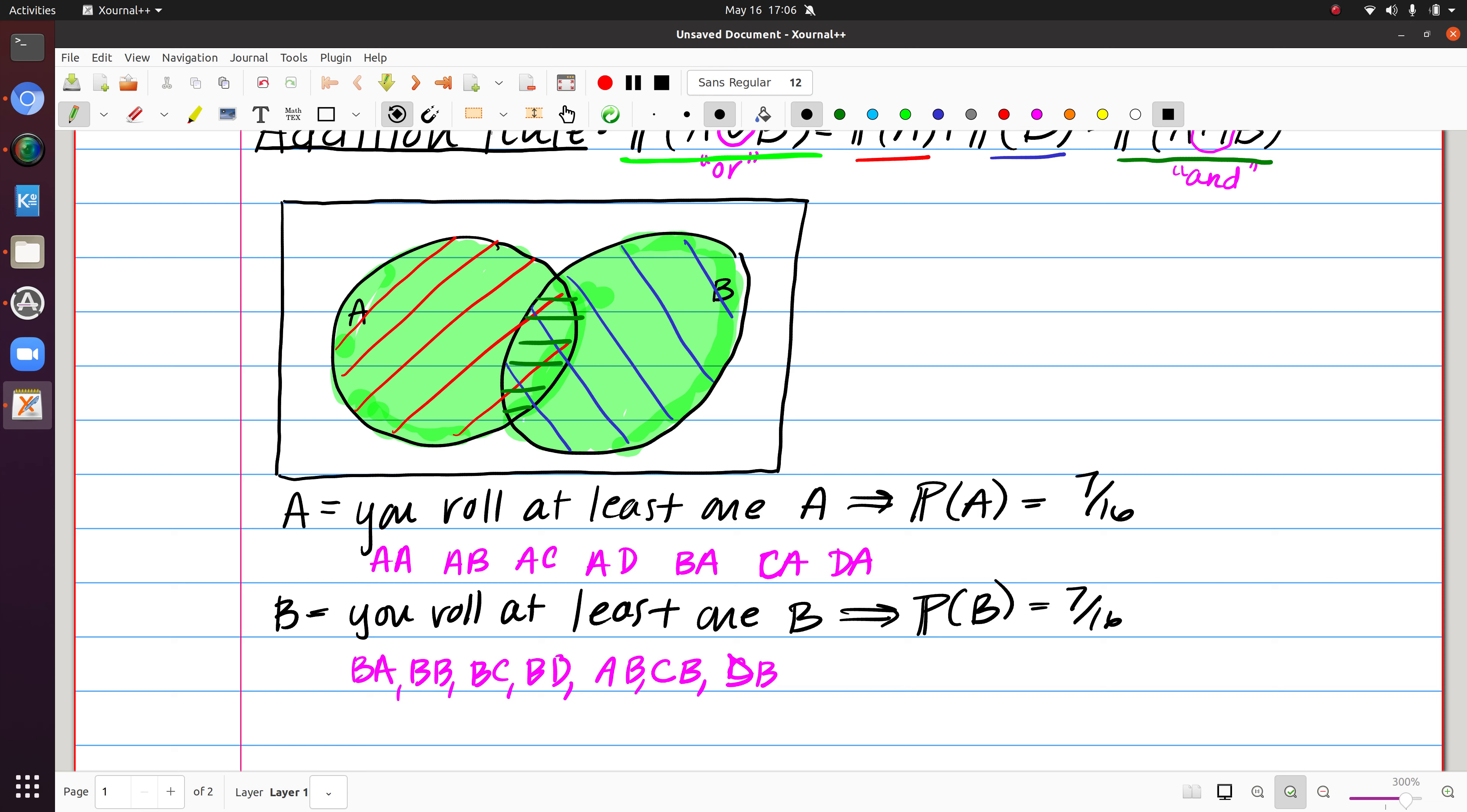Well notice that if I wanted to use this formula that we just wrote down, we should get the probability of A plus the probability of B minus the intersection. So what we want to think about here is that the intersection would actually be including these two things. So the probability of the intersection is 2 over 16, and we get 12 over 16.